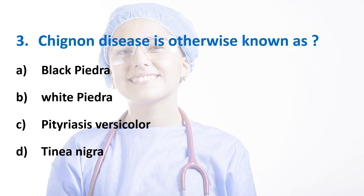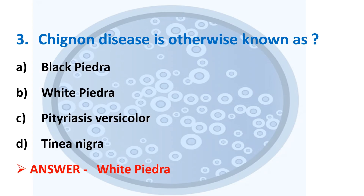Third question: Chignan disease is otherwise known as? Options: Black Piedra, White Piedra, Pityriasis versicolor, Tinea nigra. Answer is White Piedra, which is caused by Trichosporon beigelii. Trichosporon beigelii produces arthrospores. Black Piedra is caused by Piedra hortae; Pityriasis versicolor is caused by Malassezia furfur; and Tinea nigra is caused by Hortaea werneckii.